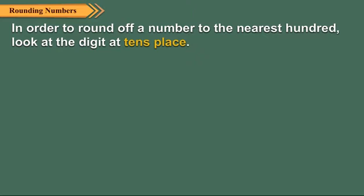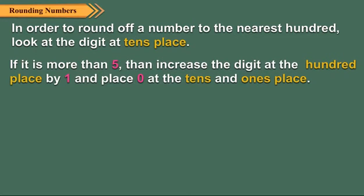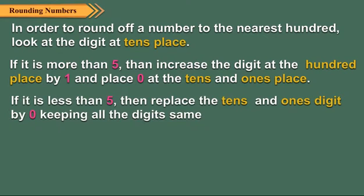In order to round off a number to the nearest hundred, look at the digit at the tens place. If it is more than five, then increase the digit at the hundreds place by one and place zero at the tens and ones place. If it is less than five, then replace the tens and ones digit by zero, keeping all the digits the same.